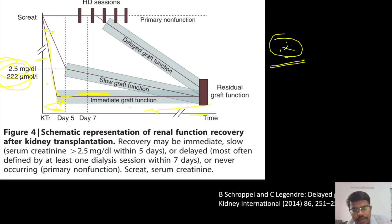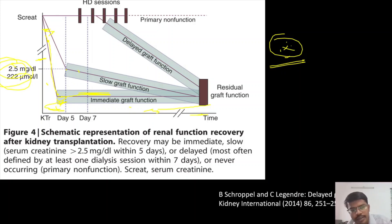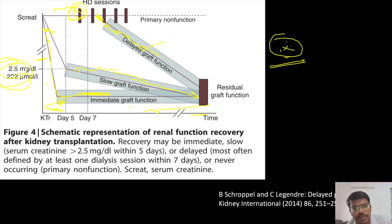Sometimes even after the 5th day, the creatinine might not reduce below 2.5. After 7 days or after some period, the kidney starts its function at a slower pace and reaches the baseline value — that is the slow graft function. Suppose within one week the patient required dialysis and subsequently the kidney graft started functioning — that is delayed graft function. If the kidney doesn't have any function at all and the patient is again dependent on dialysis, it is primary non-function.